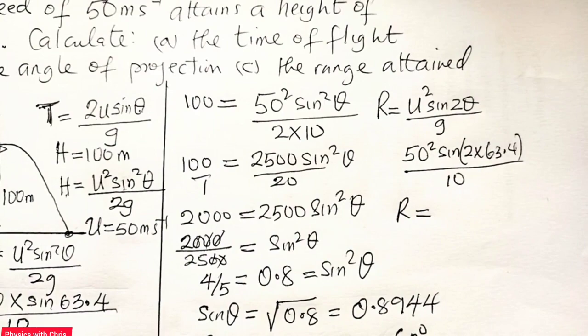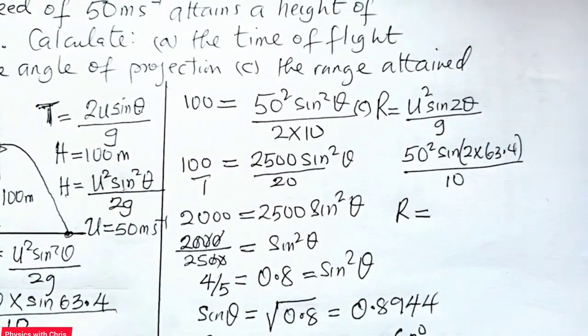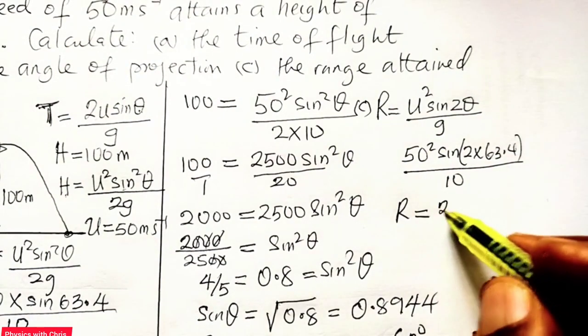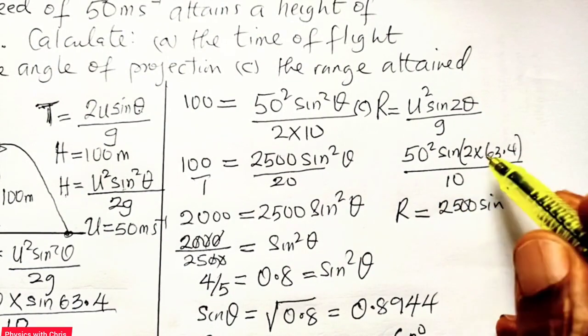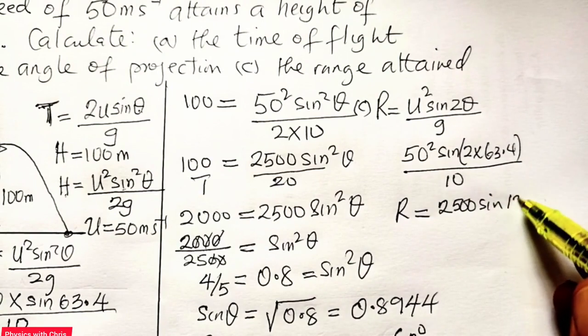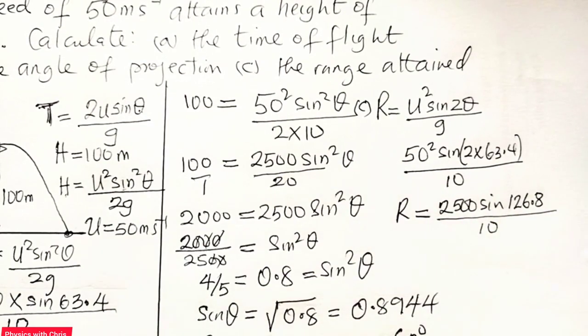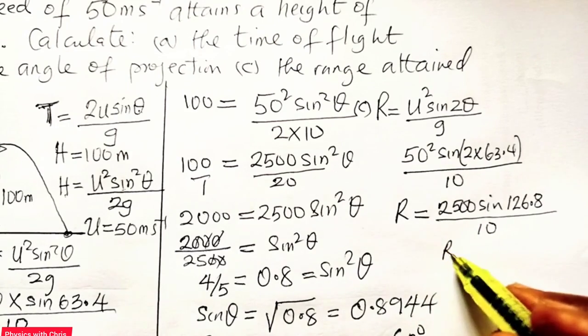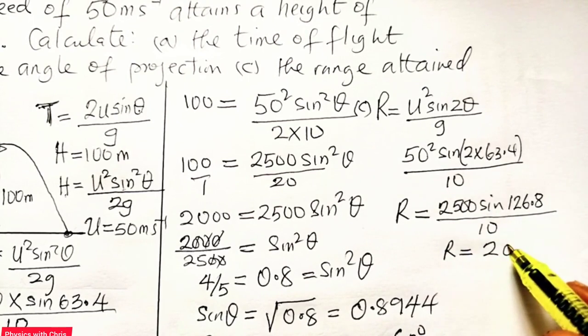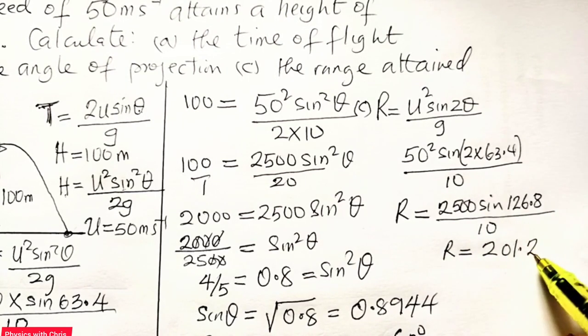So this is the C part of the question, to calculate the range. So I have 50 squared, that is 2500, sine 2 times, this gives me 126.8 degrees, divided by 10. So 126.8 divided by 10 will give me 201, the range of the projectile will be 201.2 meters.